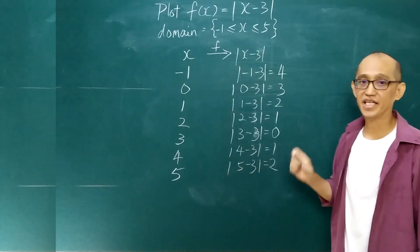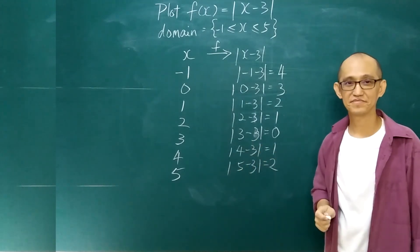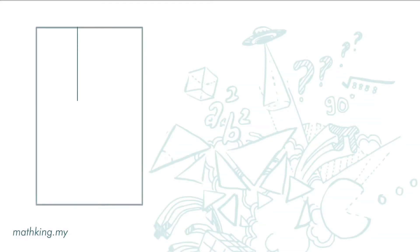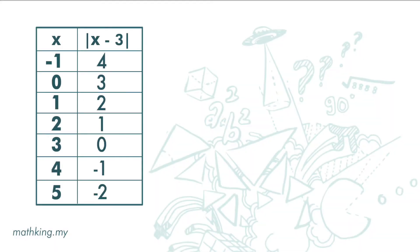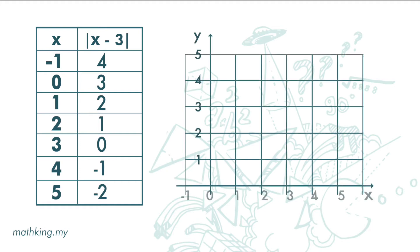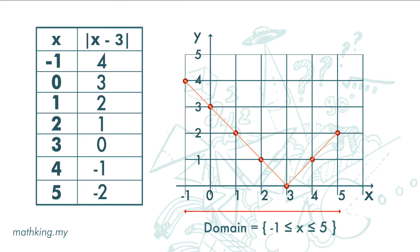From here, we can plot the graph. If this is continuous data, we will get a line graph like this. The domain is negative 1 to 5, and the range is 0 to 4.